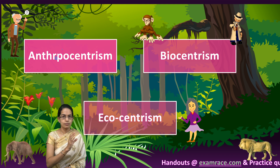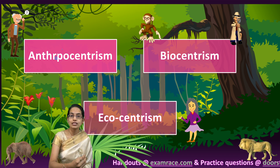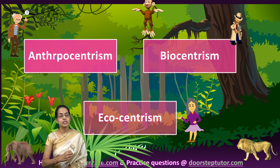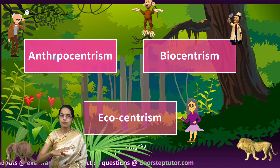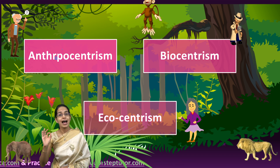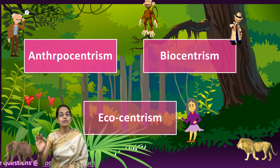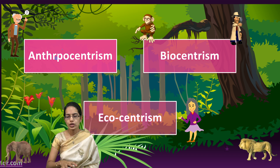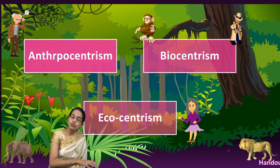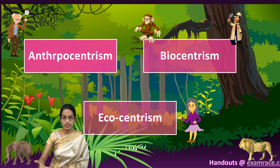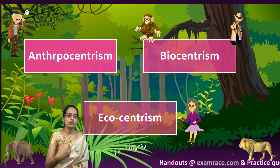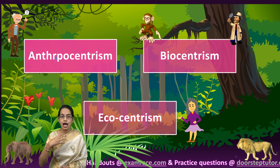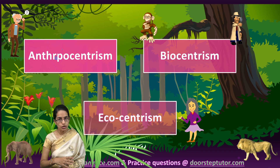To summarize: anthropocentrism is a human-induced approach where we focus based on our own interests. Biocentrism holds that each organism has a right to live a worthy life. Ecocentrism focuses on the environment deserving moral consideration, involving the approach of both human beings and other living organisms.